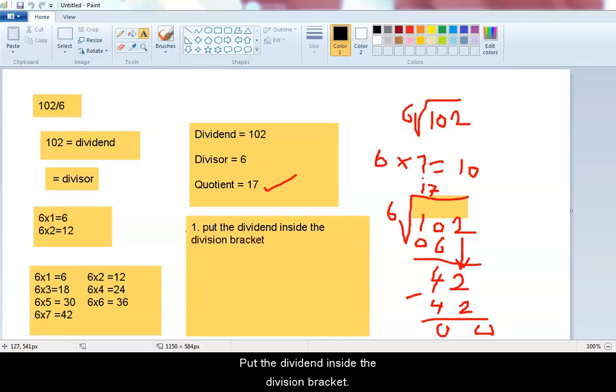You put the dividend inside the division bracket and the divisor outside the bracket. Just like here, 102 is the dividend, it goes inside the division bracket. 6 is the divisor, it stays outside the bracket.